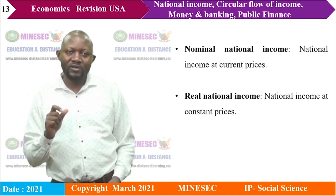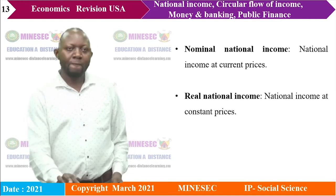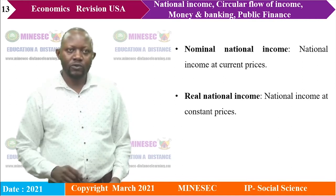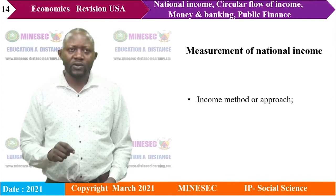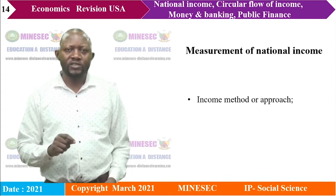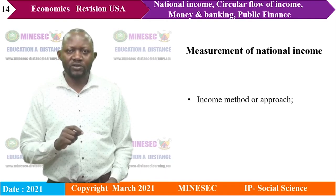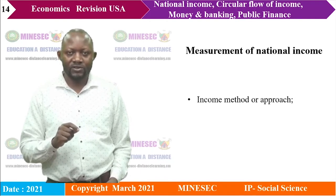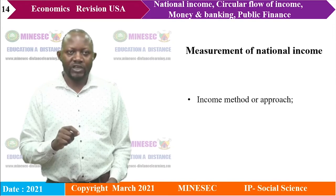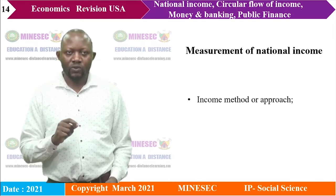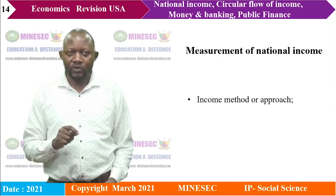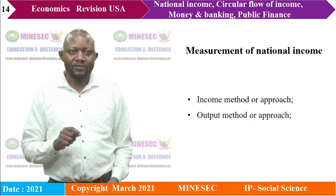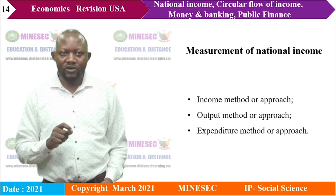There are three approaches or methods of measuring national income. We start with the income method, which deals with summing all the rewards of the various factors of production — rents, interest, profits, and wages. The output method consists of summing the output in the various sectors: primary, secondary, and tertiary. And the expenditure method has to do with summing all the expenses incurred by economic agents within the country.